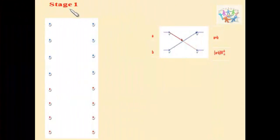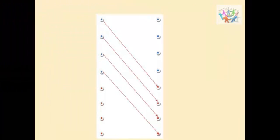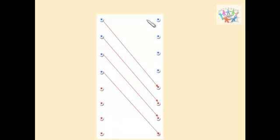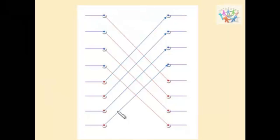For stage 1, we draw 8 pairs of points corresponding to the 8 inputs. We join the first 4 points with the last 4 points and the last 4 with the first 4. After joining, this is how stage 1 looks.